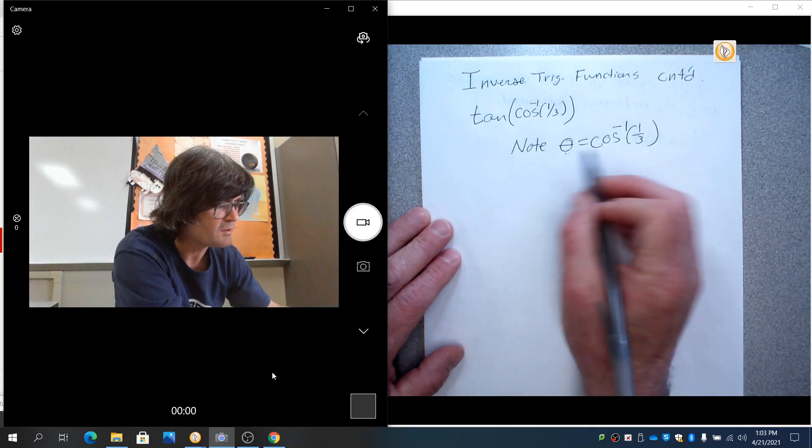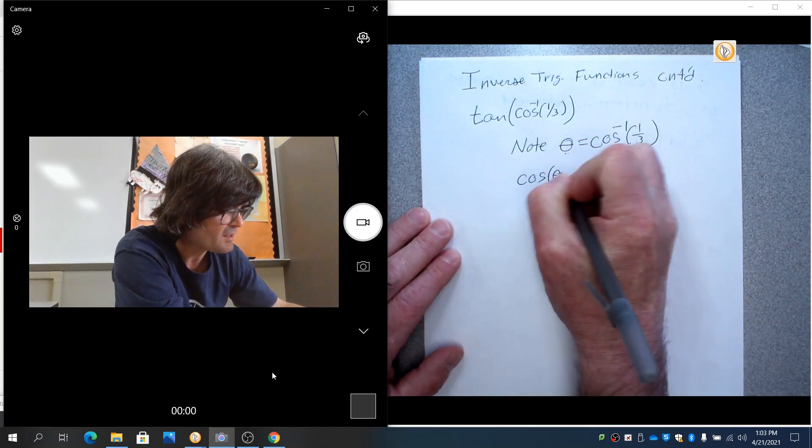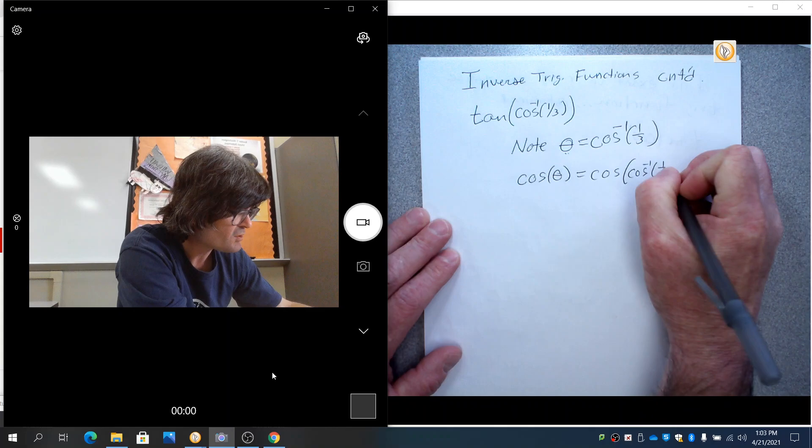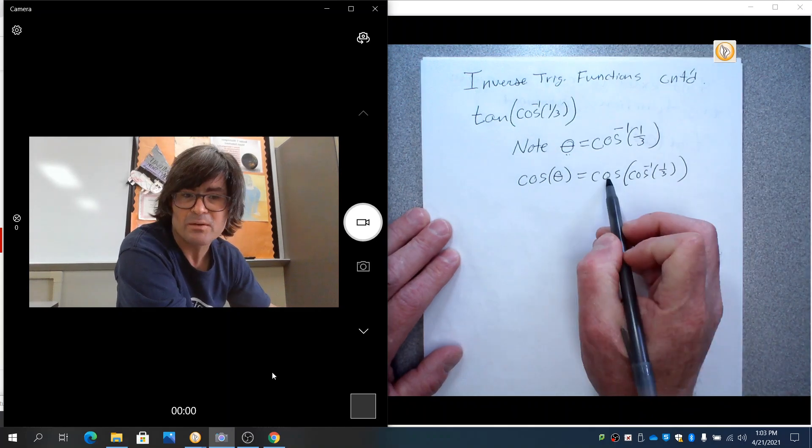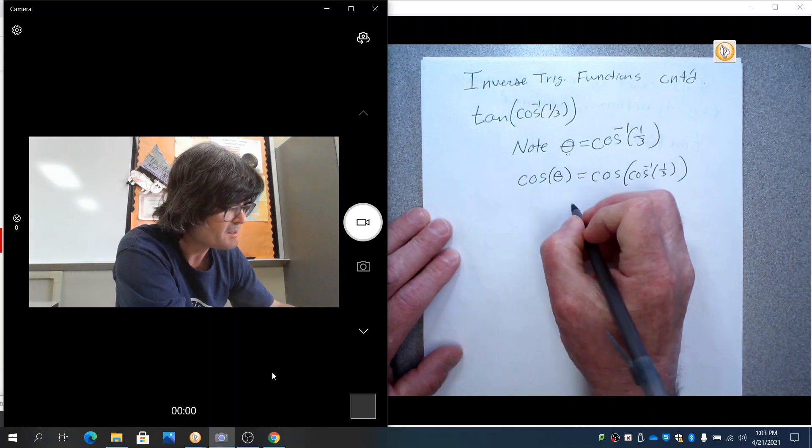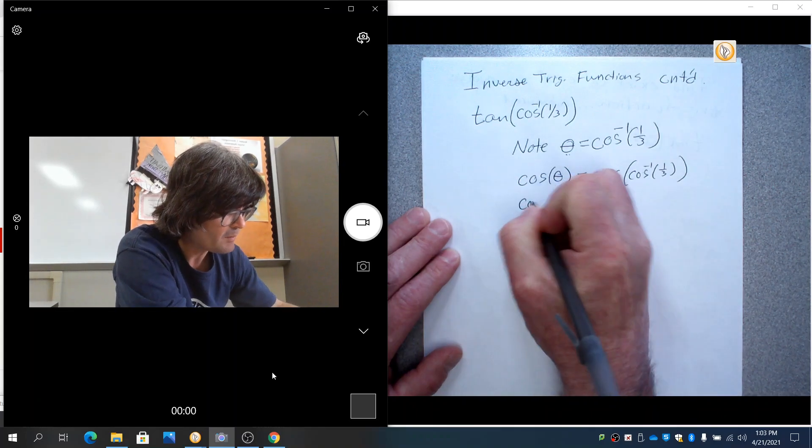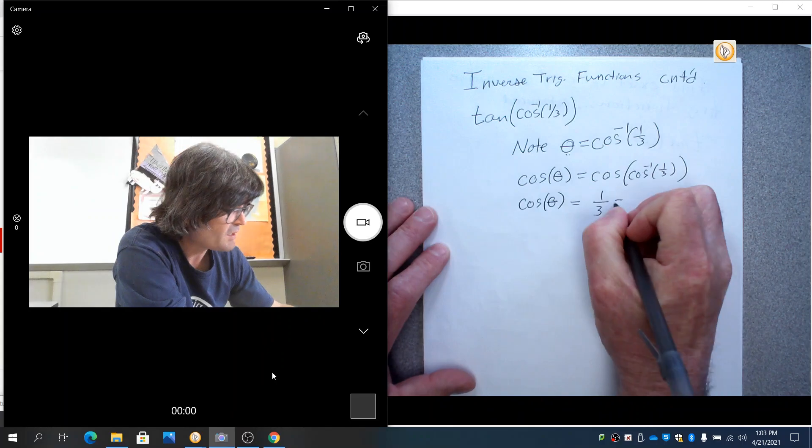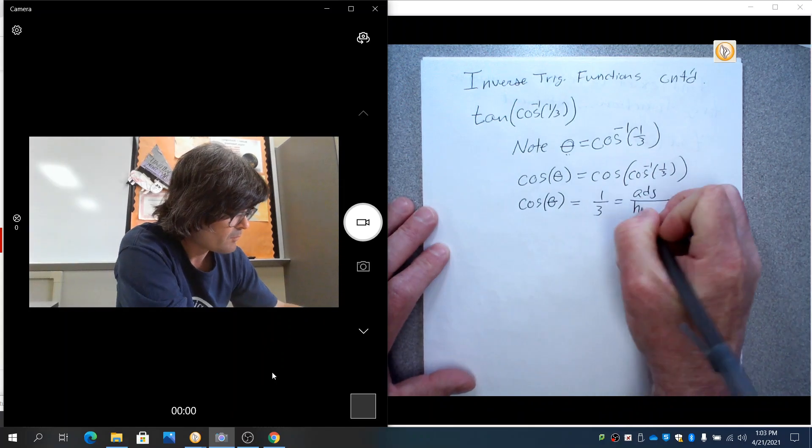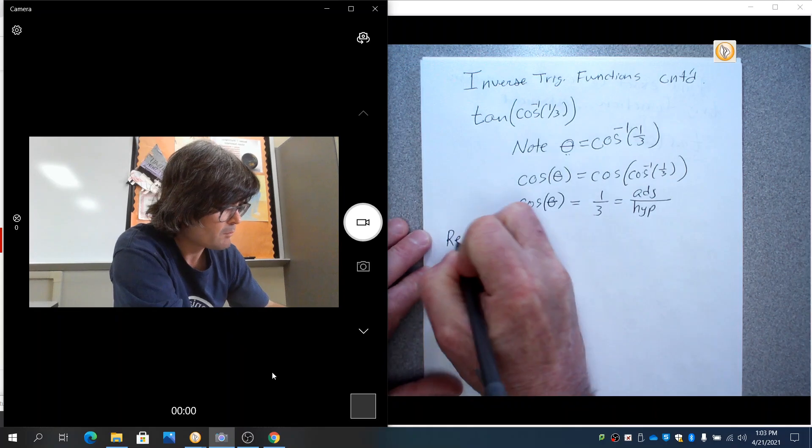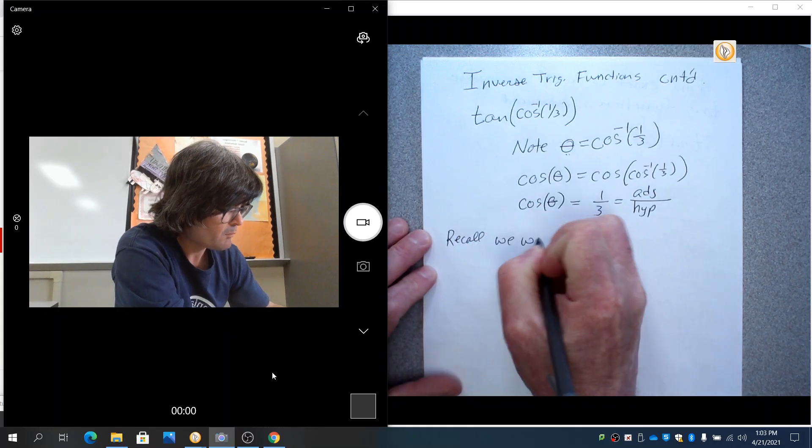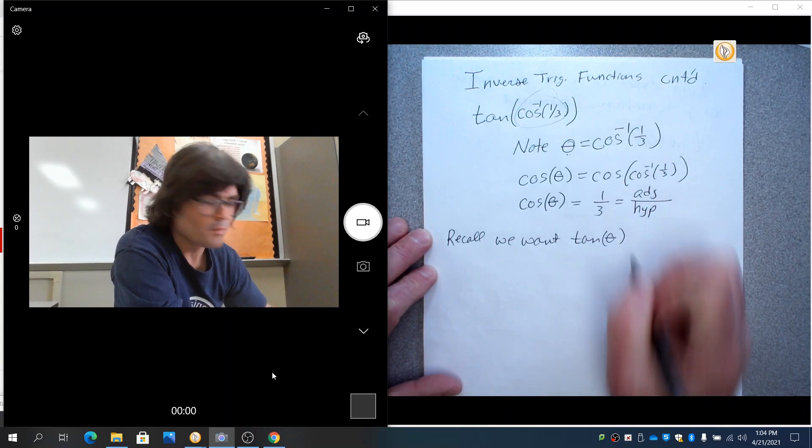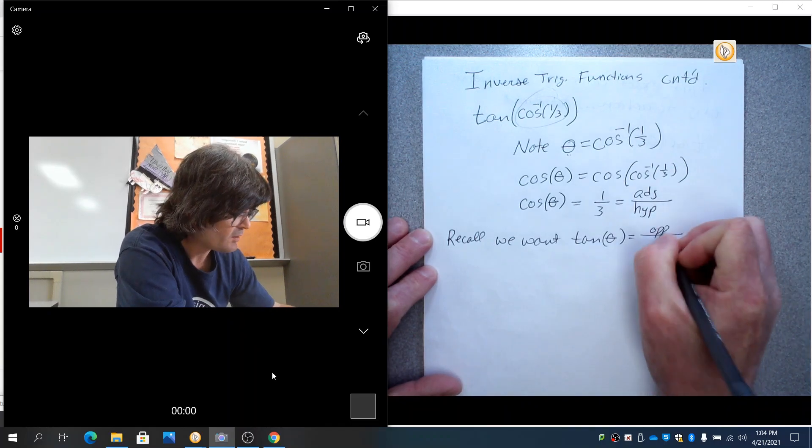If you have angle equals this, you can take the cosine basically of both sides, cosine of the inverse cosine, and suddenly one thing about inverse trig functions is the original trig function with the inverse put into it or vice versa makes them cancel out. So basically what we know here is cosine of this unknown angle is one-third, and the cosine is adjacent over hypotenuse, and recall we want tan of this theta, which is opposite over adjacent.